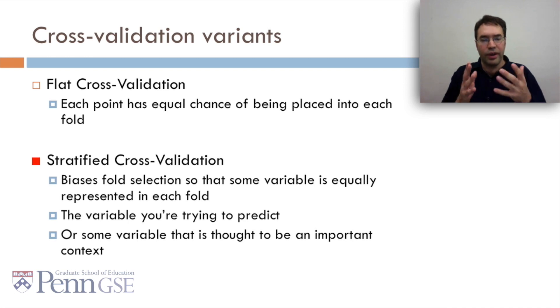Stratified cross-validation, by contrast, biases fold selection so that some variable is equally represented in each fold. Typically, and kind of by default, it's the variable you're trying to predict, but it can also be some other variable that you think is some kind of important context.